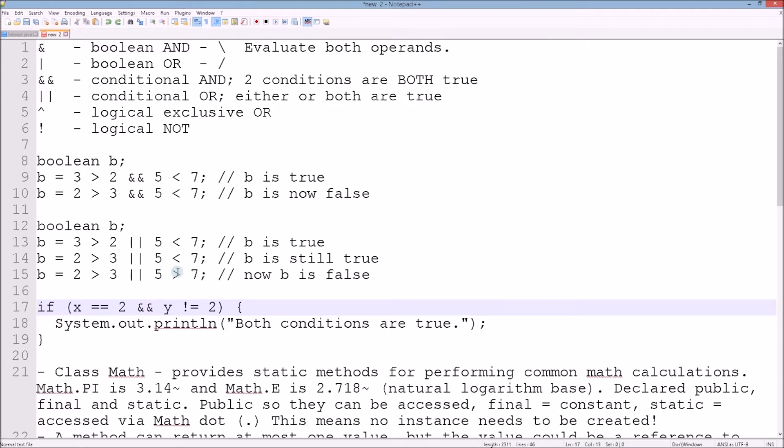The boolean AND returns true if both operands evaluated to true. That means both statements on both sides have to be evaluated before the AND operator is applied. The boolean OR returns true if at least one of the operands evaluates to true. Both operands are evaluated before the OR operator is applied.